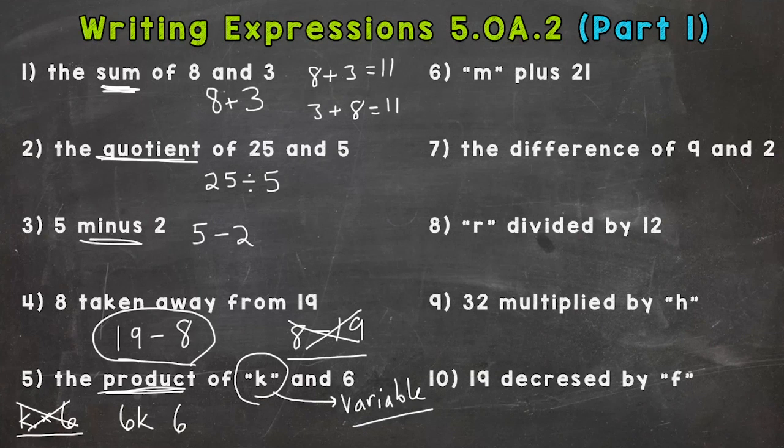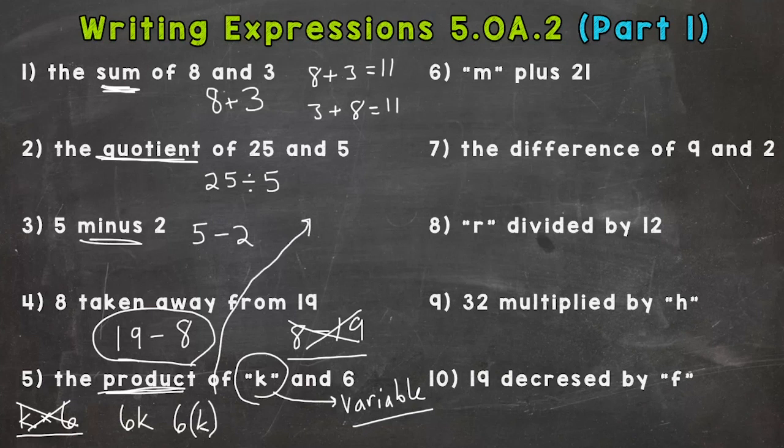Another one you can use or you might see is right next to a parenthesis. Anything right next to a parenthesis means multiply. So that means 6 times k. Another one is a dot—make sure it does not look like a decimal—but that means multiplication.